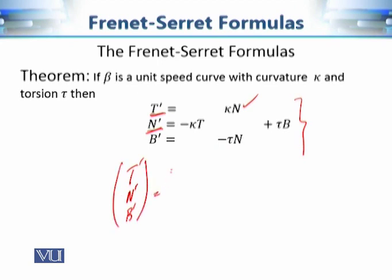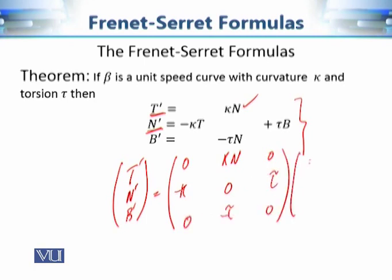The relation can be expressed as: T', N', B' equals the matrix [0, κ, 0; -κ, 0, τ; 0, -τ, 0] multiplied by the column vector [T, N, B].